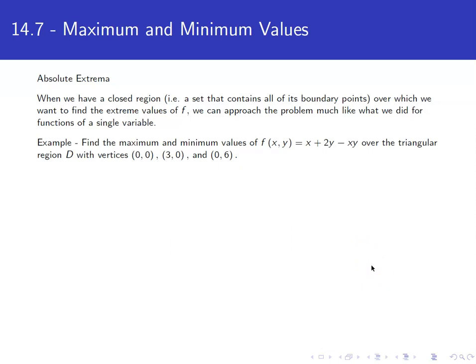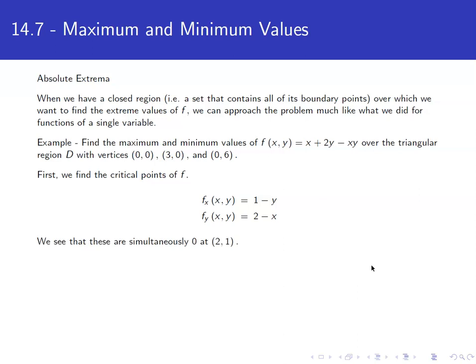Let's find the maximum and minimum values of f(x, y) = x + 2y - xy over the triangular region with vertices (0, 0), (3, 0), and (0, 6). First, find critical points. The partial with respect to x is 1 - y, and the partial with respect to y is 2 - x. These are simultaneously zero only at the point (2, 1), which is indeed inside the triangular region. If a critical point is not in the region of interest, we discard it.